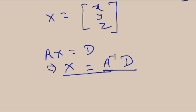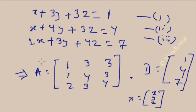To solve for x, y, and z, you first need to find the values of A inverse and multiply it with D. That's a simple process. Now I will give you an example of how to solve for x, y, and z.